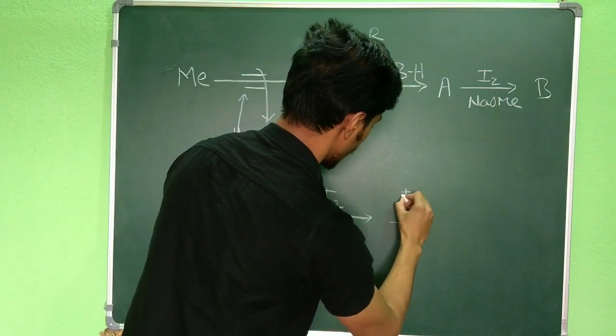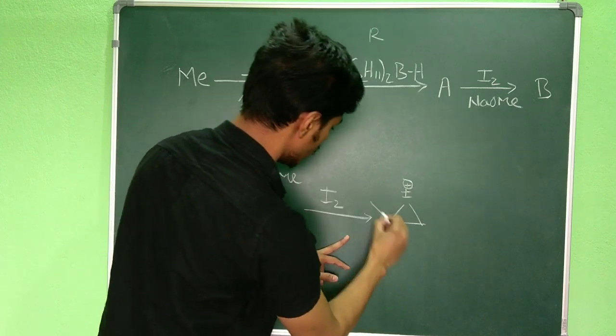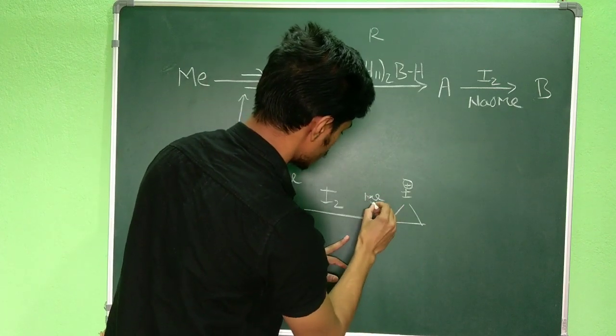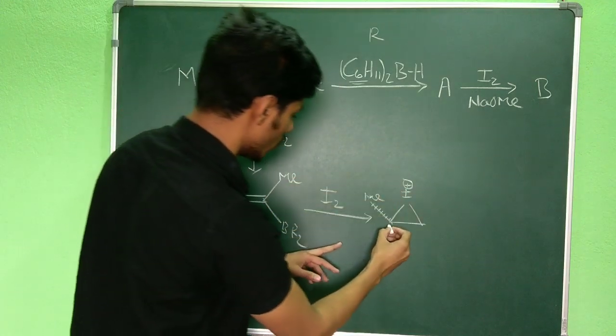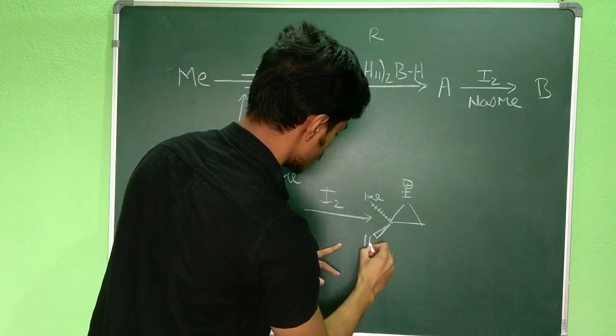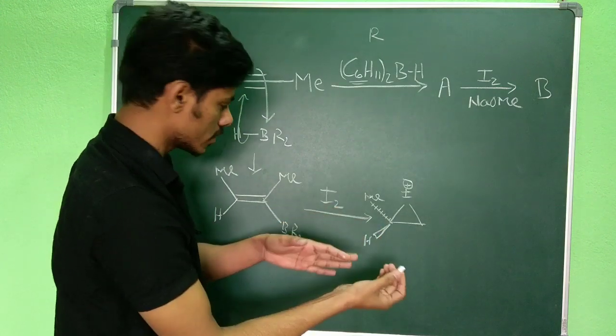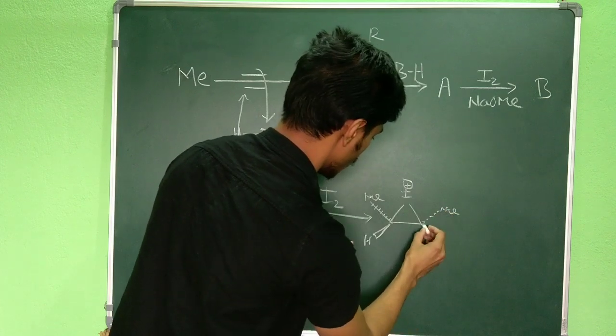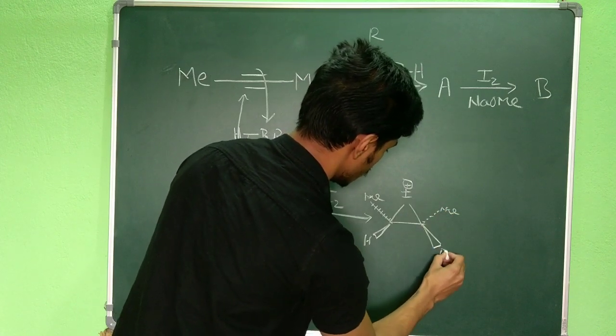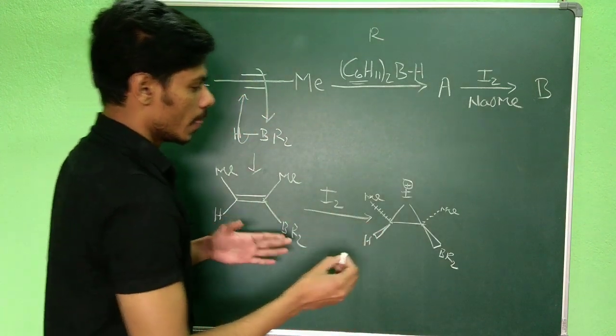And now another methyl group here. So this is intermediate A. Now it is treated with I2. If you add I2 over here, you know the iodonium ion will be generated - iodonium cation like this. Here you have the methyl group behind the board.